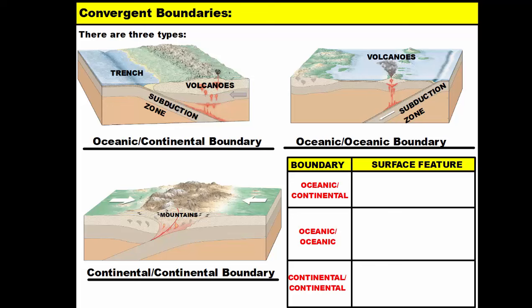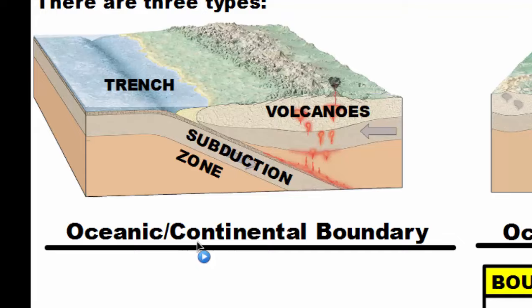The next type of boundary is called a convergent boundary. Convergent boundaries are where plates collide. There are three types of convergent boundaries: an oceanic-continental boundary, where oceanic crust collides with continental crust; an oceanic-oceanic boundary, where oceanic crust collides with more oceanic crust; or a continental-continental boundary, where two pieces of land or continents collide together.